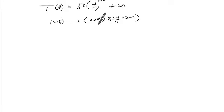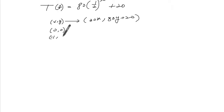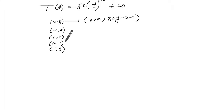This is a horizontal stretch by a factor of 30. The main points are (0, 0), which is not on the graph but important to consider. For negative one we get two, and for zero we start at (0, 20).